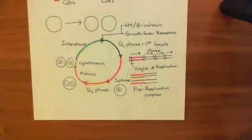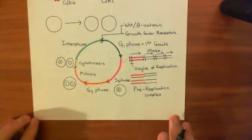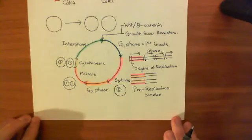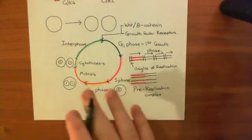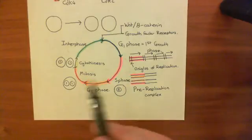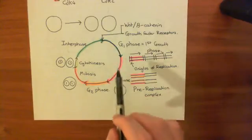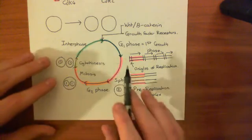Welcome to this next video on P53 and the response to DNA damage. We've looked at the cell cycle, the different phases, and the big picture of what is happening in each phase. What we now need to look at is how the different cyclin-dependent kinases are involved in the different phases of the cell cycle.